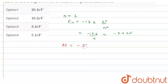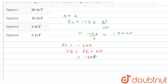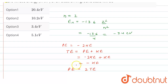As we know, potential energy equals minus two times kinetic energy (PE = -2KE). Also, total energy equals potential energy plus kinetic energy. Substituting: -2KE + KE = -KE. So total energy equals negative kinetic energy, or equivalently, potential energy equals two times the total energy.